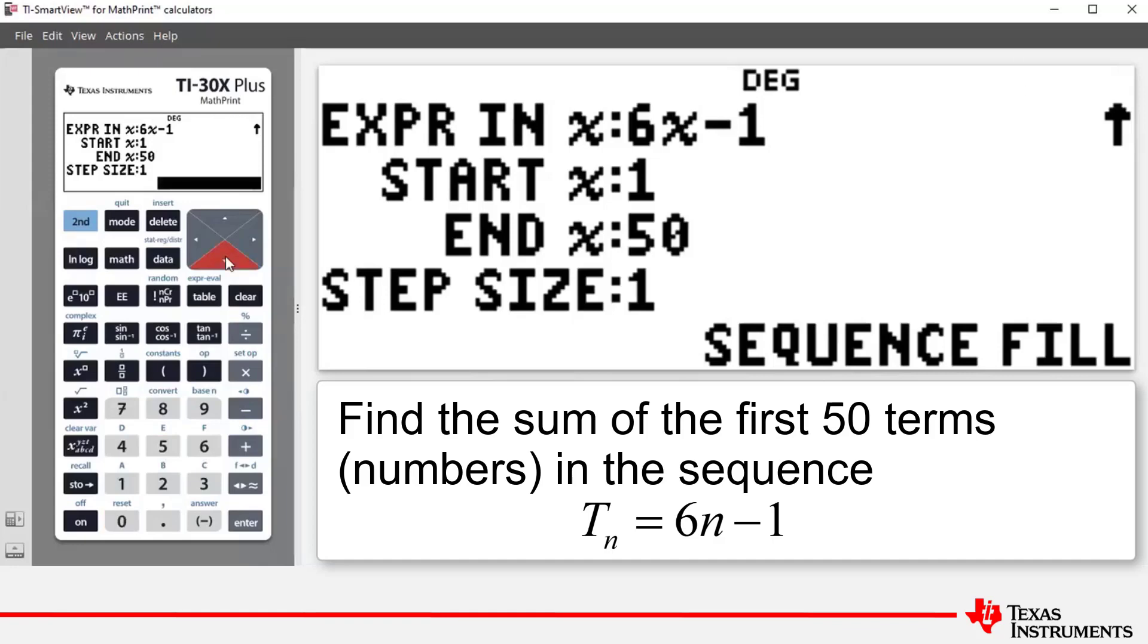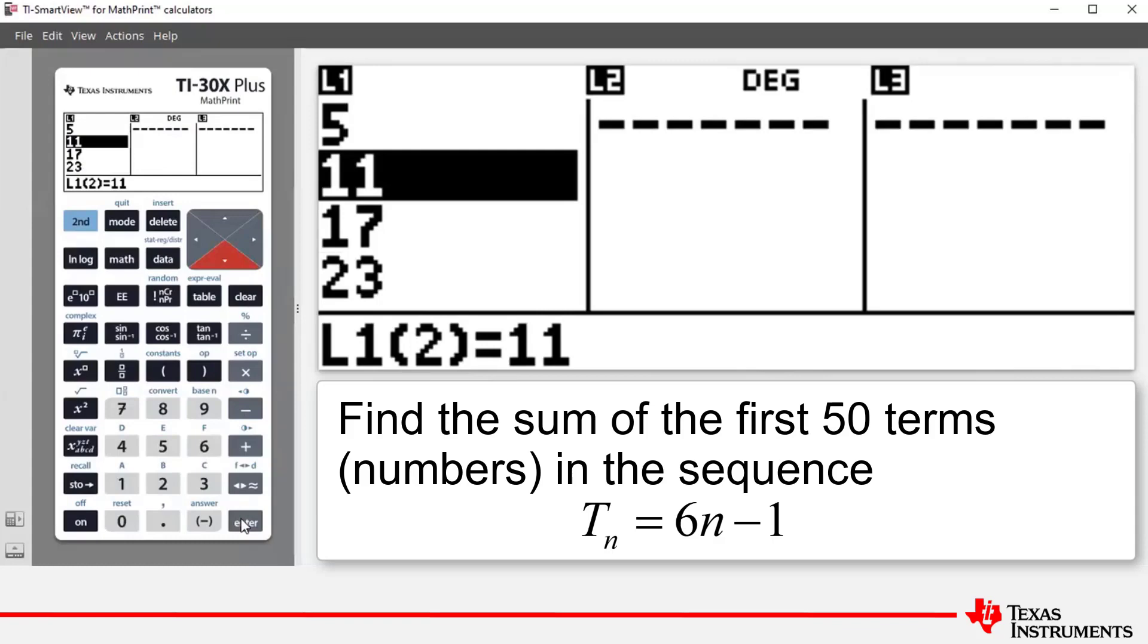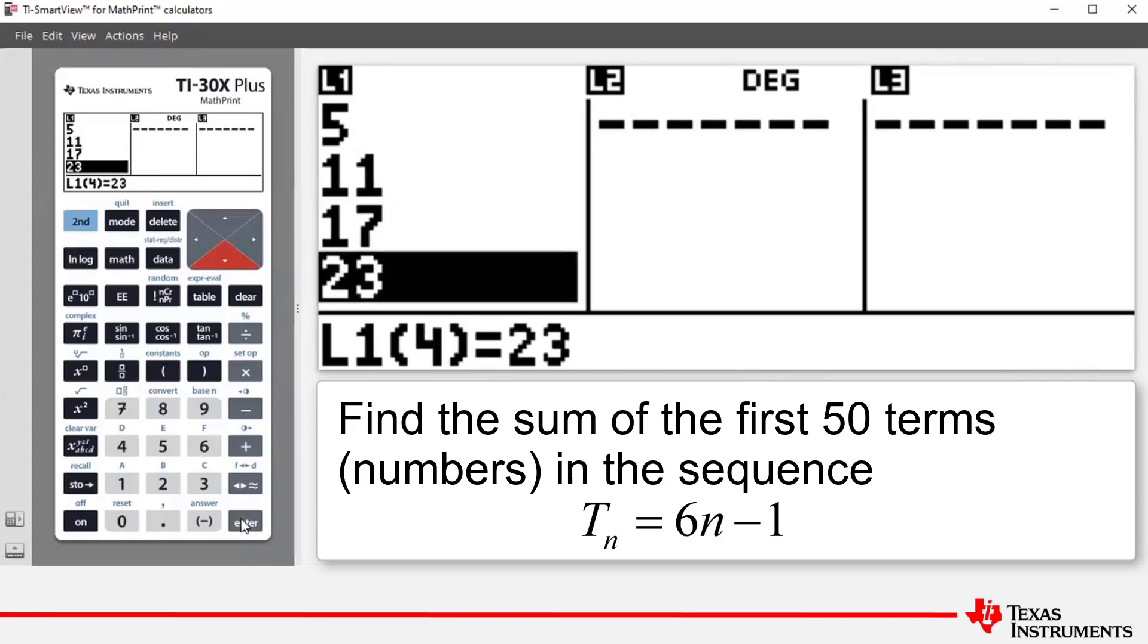We use arrow down to highlight sequence fill. Press enter and you can see that L1 or list 1 now consists of the first 50 values generated by that formula. So it starts with 5, then 11, 17, 23, etc, etc.